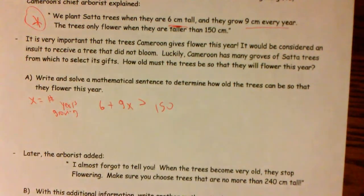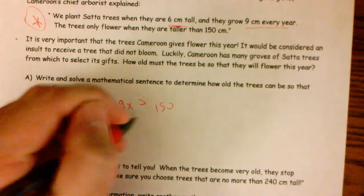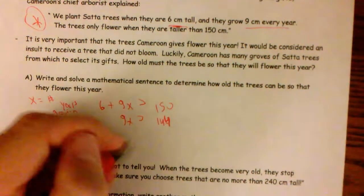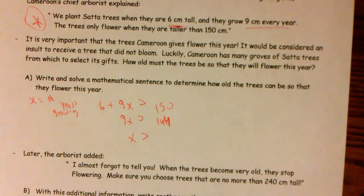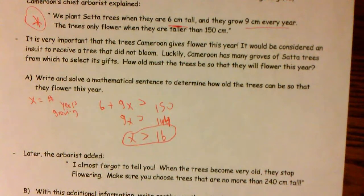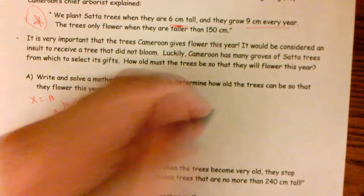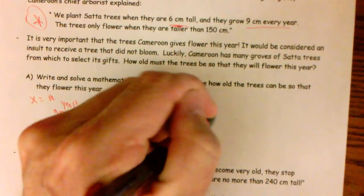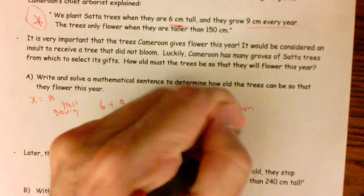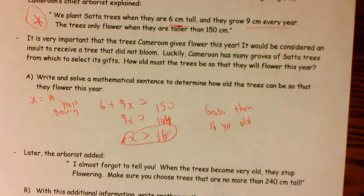And if I solve this for X, I can figure out how many years the trees have to be, how old they have to be, so that when I give them away they will flower. I would subtract six from both sides. I can subtract. And I would divide both sides by nine. Well, 144 divided by nine, that is 90 and 54, that is 16. Trees need to be greater than 16 years old if they're going to flower. So greater than 16 years old.